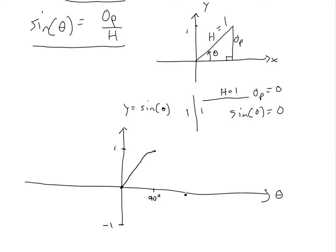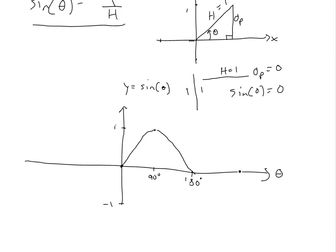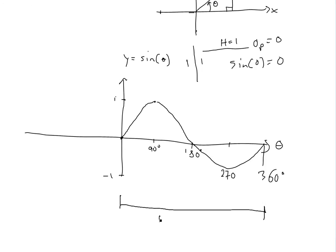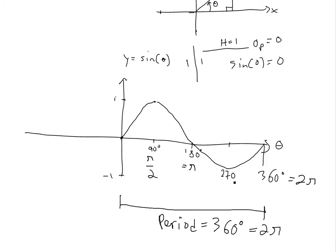It goes up to 90, and at 180 it's zero again — just a horizontal line — so then it goes to zero. Then at 270 degrees it's negative one. And then at 360 degrees, which is another horizontal line, it completes the cycle. This is the period — 360 degrees, or 2 pi. So 360 is 2 pi, 180 is pi, 90 is pi over 2, and 270 is 3 pi over 2.